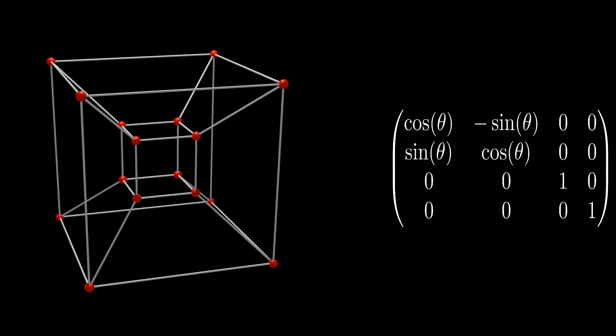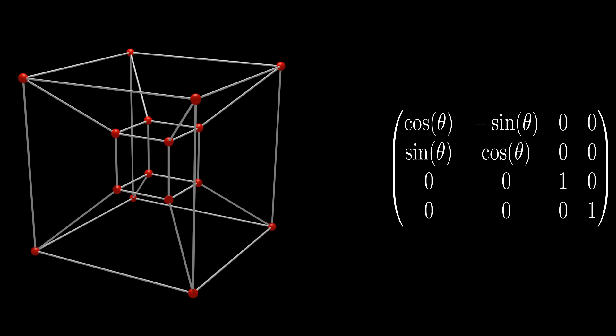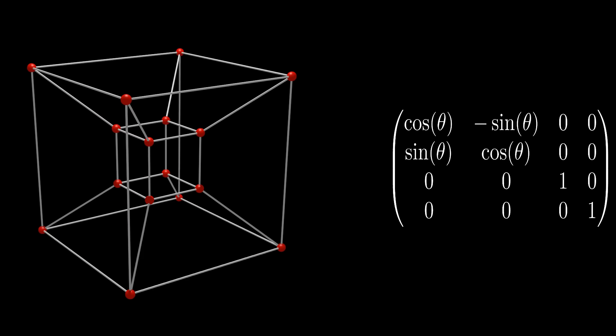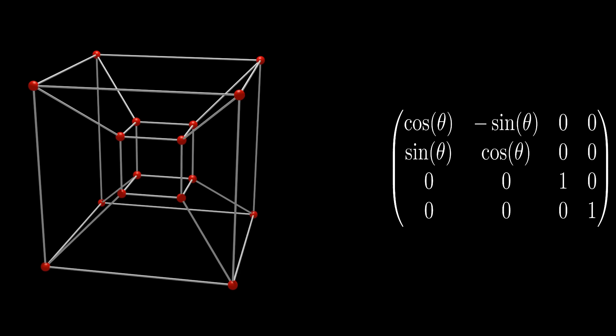In 4 dimensions, this doesn't really change. We can see a rotation in the XY plane simply by tacking an identity matrix onto the end of our rotation matrix.